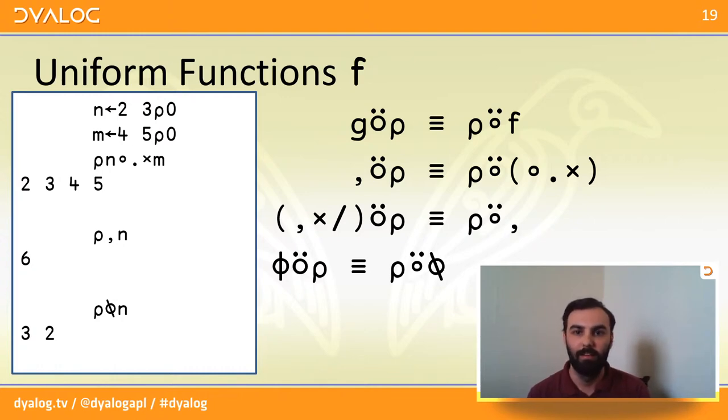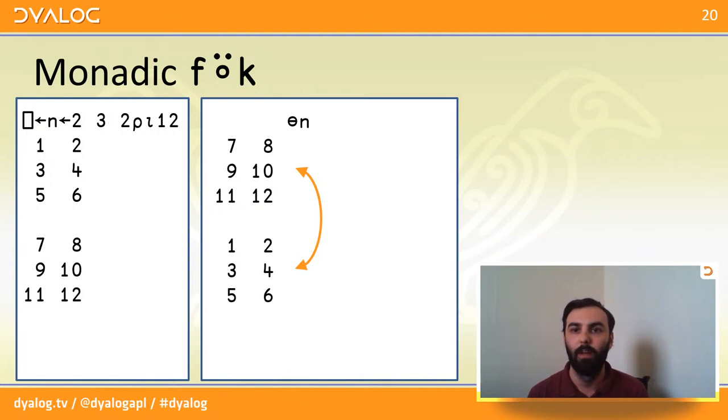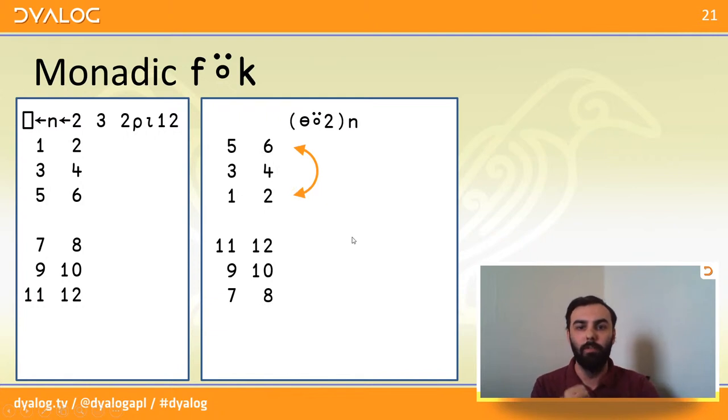So, now let's start looking at the rank operator proper. So, let's start with monadic application. In this case, we're looking at reverse first. Now, this is a leading axis function in that, by default, it works along the leading or first axis of our argument array, and it just reverses the positions of the major cells. What this means is I can say I want to reverse the vectors in each matrix. Alright, so we apply reverse first rank 2, and we can swap the positions of vectors within each matrix. And likewise, if I go down to rank 1, I can ask to reverse the positions of scalars within each vector. And, of course, I could go down to rank 0 and reverse the scalars, but that doesn't do anything.